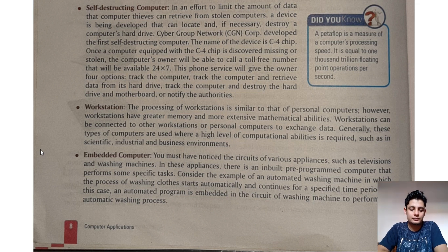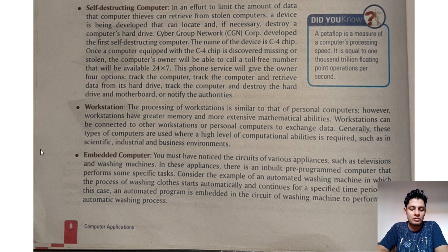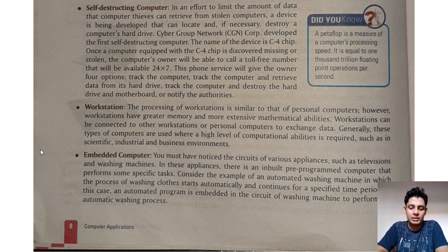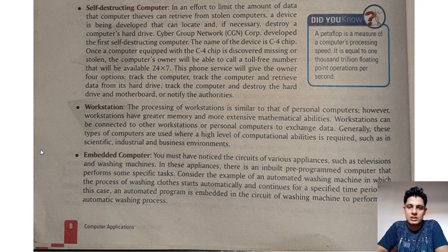Next we see embedded computer. You must have noticed the circuits of various appliances such as televisions and washing machines. In these appliances there is an inbuilt pre-programmed computer that performs specific tasks. For example, in an automatic washing machine the washing process starts automatically for a specific period of time — an automated program embedded in the circuit controls this. This small chip does calculations and, on that basis, instructions are given to the machine's motor.